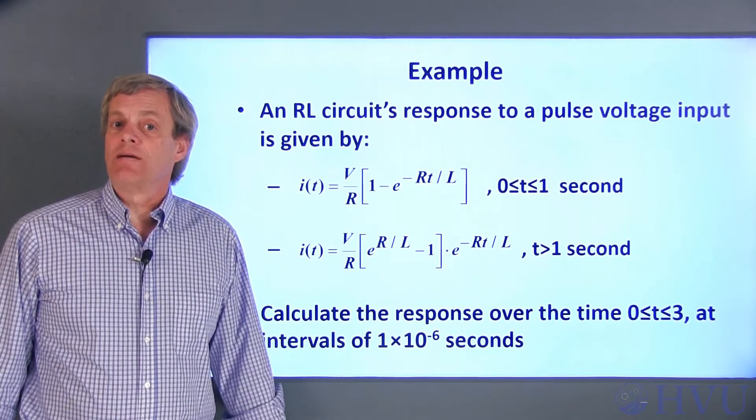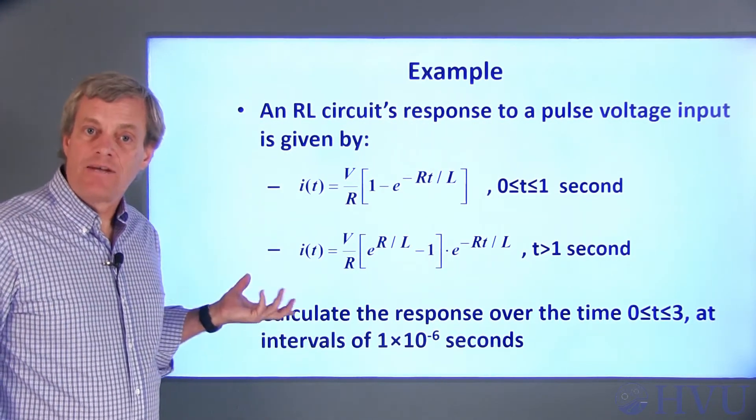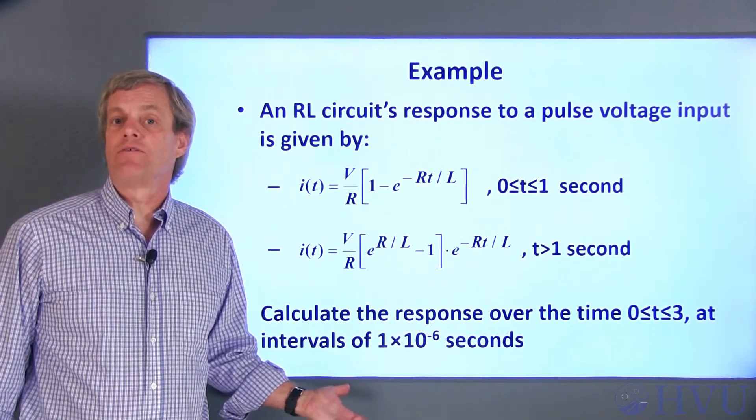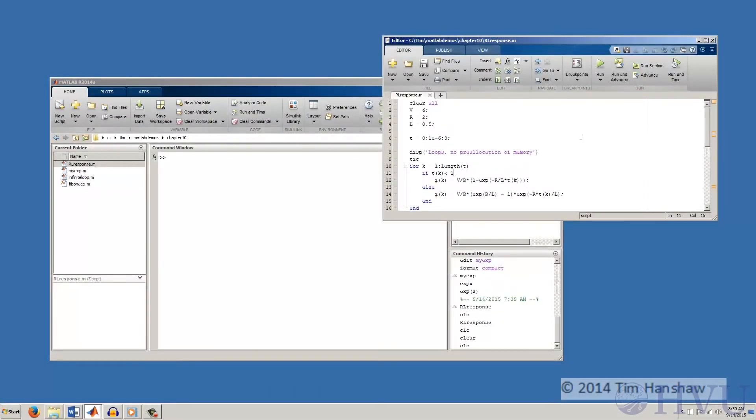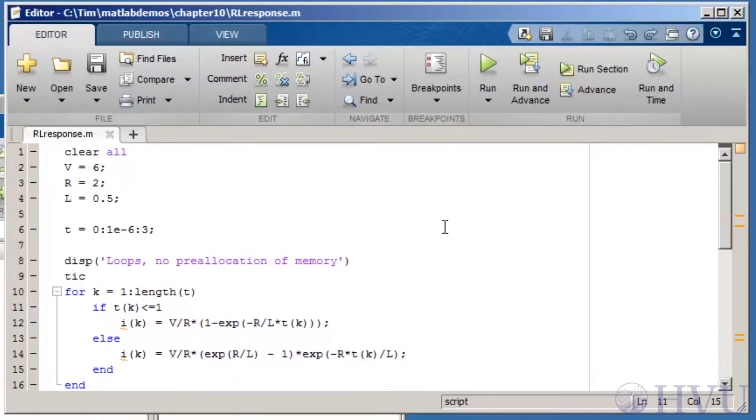In the demo for this example, I'll use both looping structures and array operators to evaluate these equations and compare the time required for each approach. Since I'm not really doing anything here that we haven't done before, I've already created a script file named rlresponse.m to implement three different approaches to calculating the inductor current. First, I set all the constants and a vector containing times.